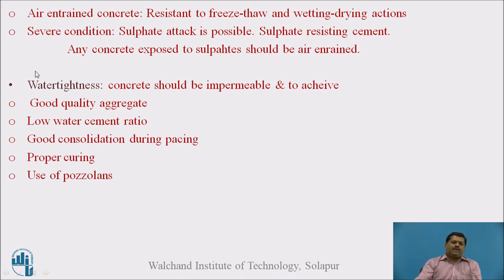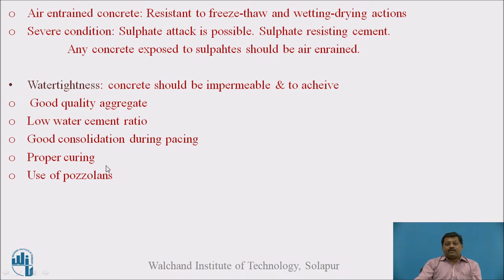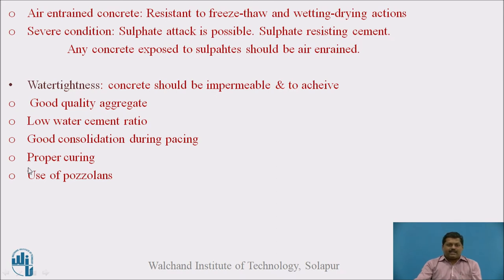When mass concrete is used for dam-side type structures, water tightness is an important property and the concrete should be impermeable. To achieve this: good quality aggregate shall be used, low water-cement ratio shall be used, good consolidation during placing, proper curing, and use of pozzolana. These measures will give water-tight concrete. The use of pozzolanas helps achieve both water tightness and optimum workability even when cement content and water-cement ratio are low.